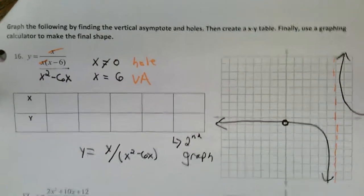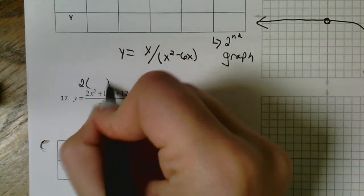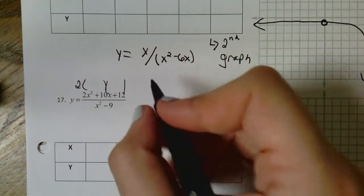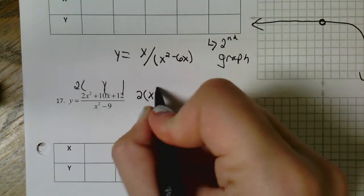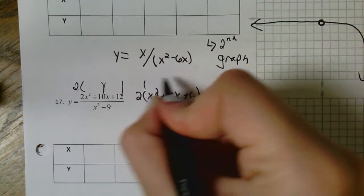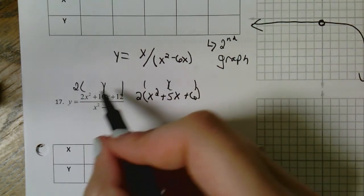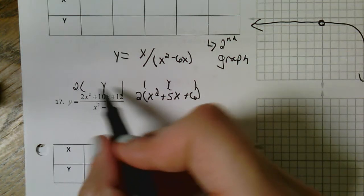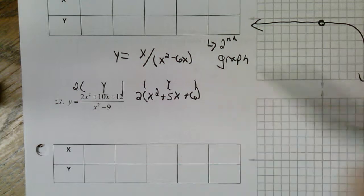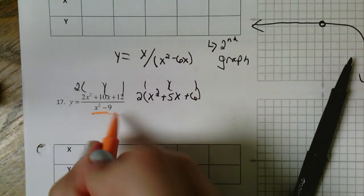For number 17, you will have to pull out a two first and then factor. Pull out the two first — this would look like 2 times the quantity x squared plus 5x plus 6 — then factor the trinomial. A couple of people got confused and wanted to jump straight into factoring, but you want to pull out the two first. Oh, and there's one of those perfect squares — told you they were going to be everywhere.